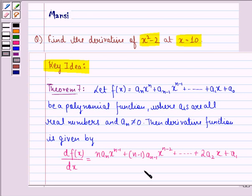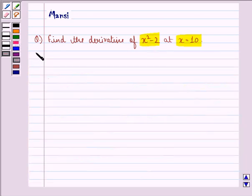Using this theorem we find the derivative of x square minus 2. So let us start with the solution to this question. First of all let f(x) be equal to x square minus 2.